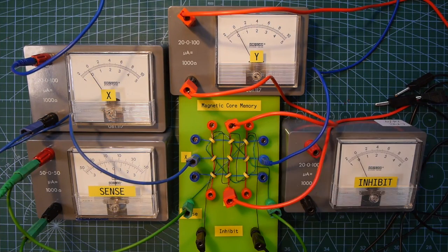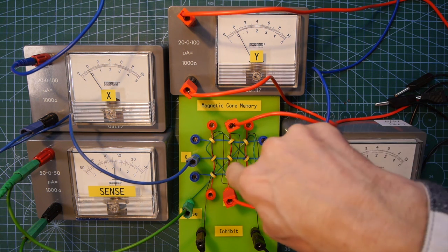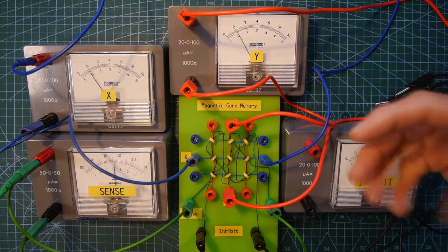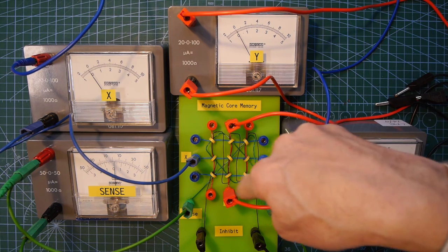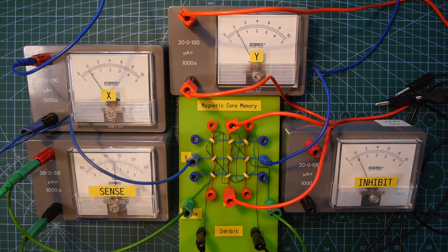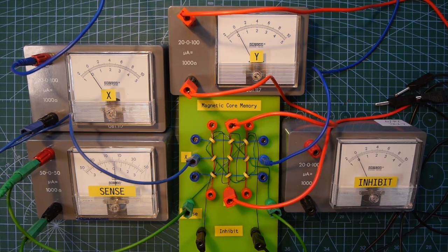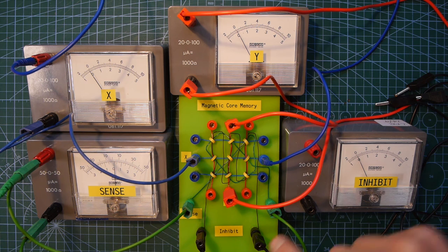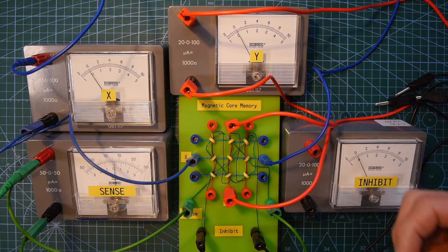Right. So let's read the data in this little central core now. And if you remember, the way to read the data is to force that core to go back to a zero state. Well, it's already in a zero state. So when we force it to go back to a zero state, there won't be any change in magnetic field in it. And as there's no change in magnetic field, we won't induce a current in the sense wire. So the sense meter won't read. So it will see that the core is storing a zero. So we're going to force this core back to the zero state. Remember, it's already in the zero state. So here we go. There's the pulse. Nothing on the sense wire at all. So that core hasn't changed. So we know that it was in a zero state before. So we've read the fact that it was storing a zero.